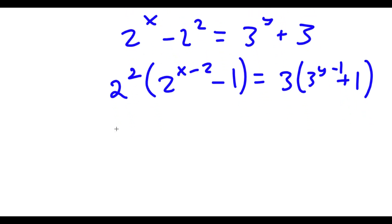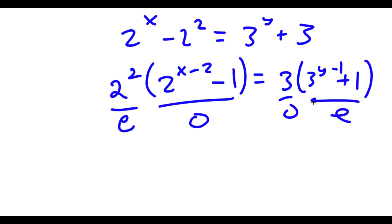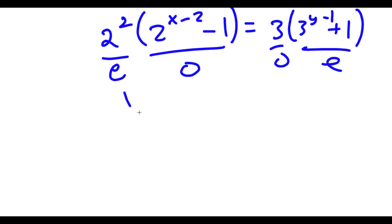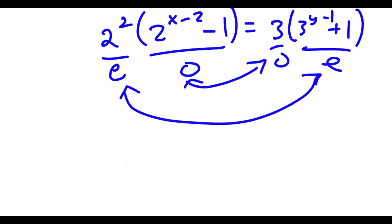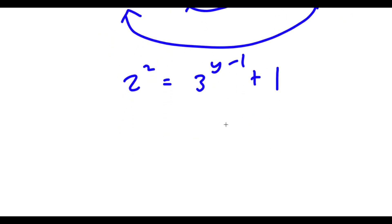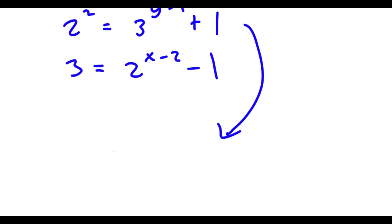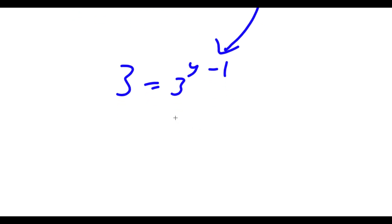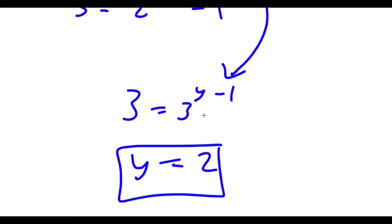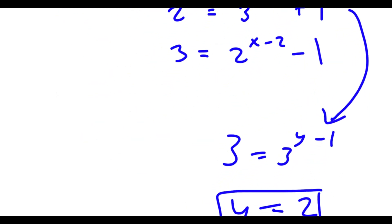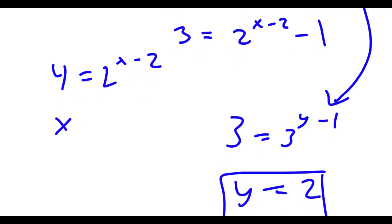Notice how I have an even number times an odd number equal to an odd number times an even number. This means the even parts equal each other and the odd parts equal each other. So I have 2 squared equals 3 to the power of y minus 1 plus 1, which gives 4 equals 3 to the power of y minus 1 plus 1, meaning 3 equals 3 to the power of y minus 1, so y equals 2. And I also have 3 equals 2 to the power of x minus 2 minus 1, giving 4 equals 2 to the power of x minus 2, meaning x equals 4.